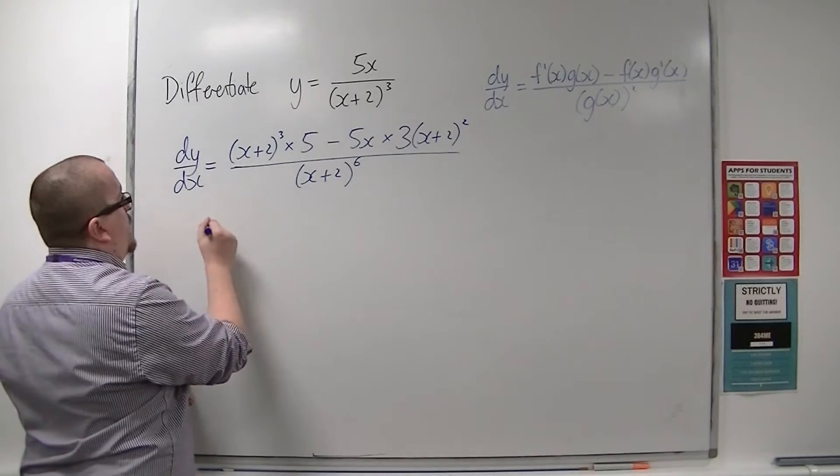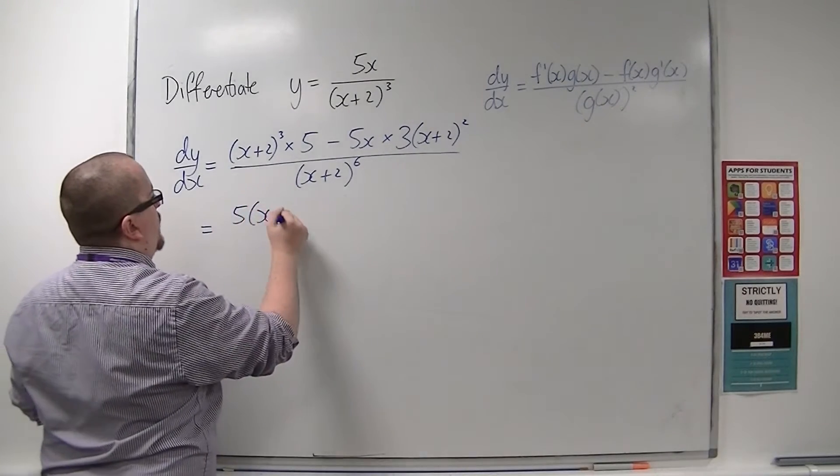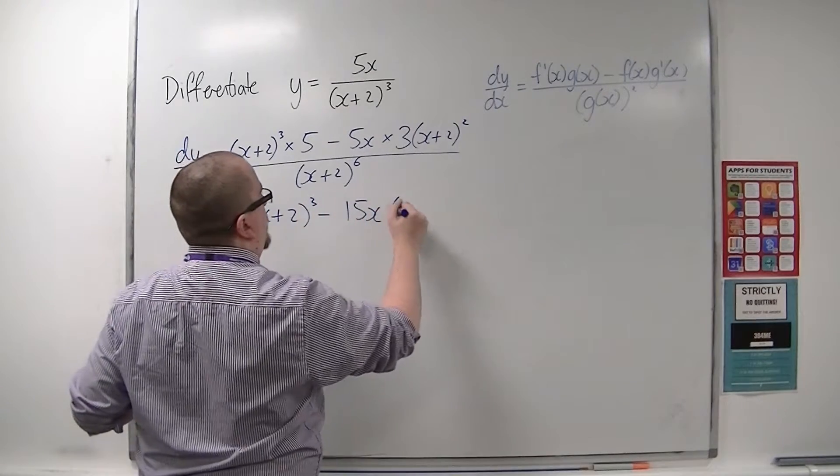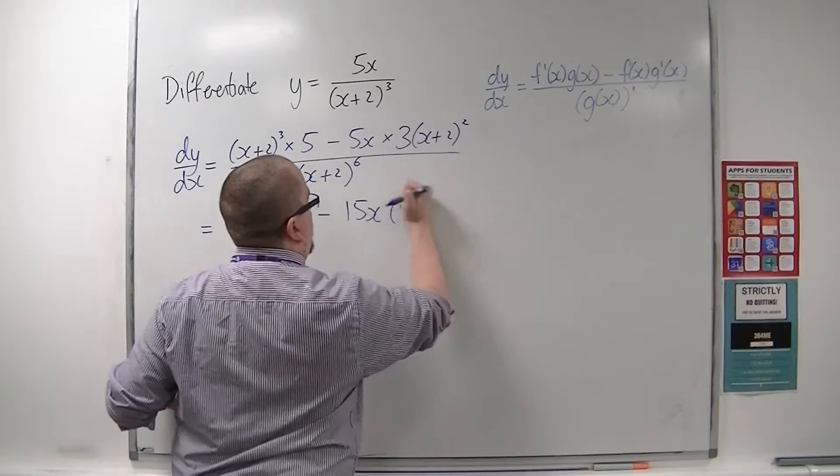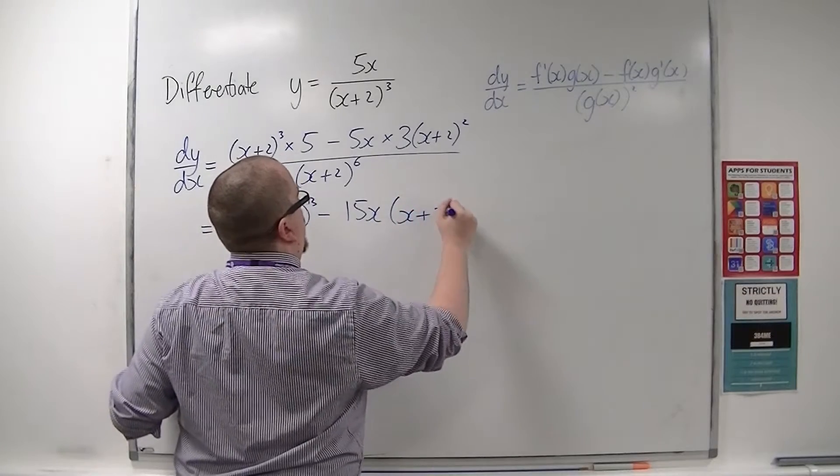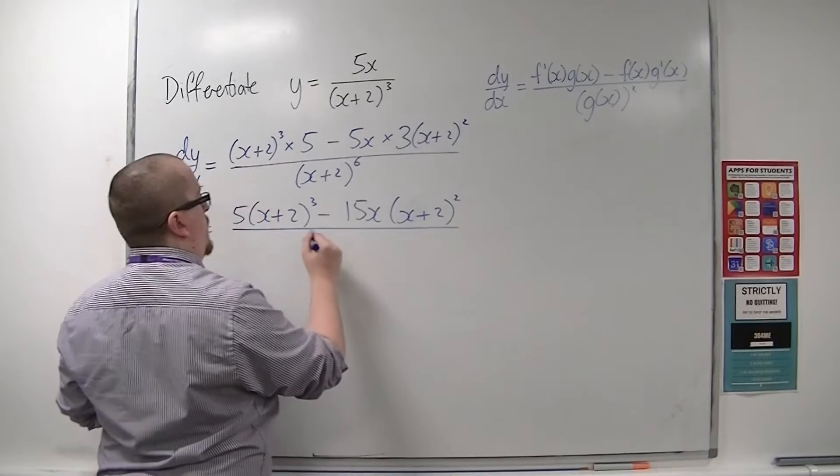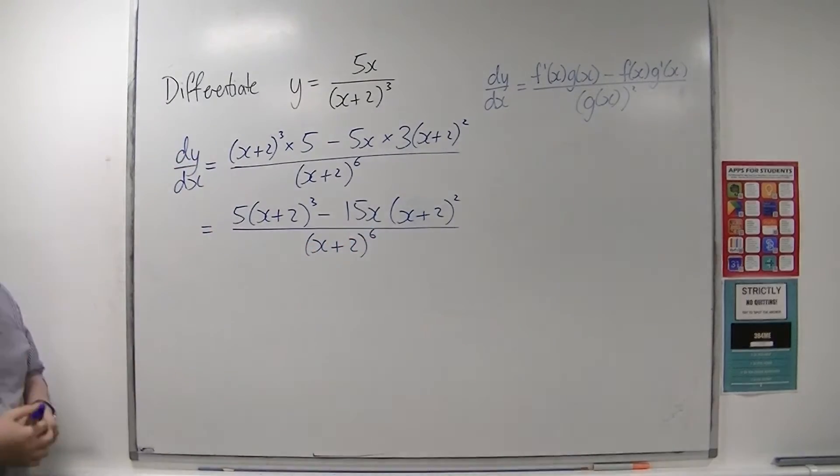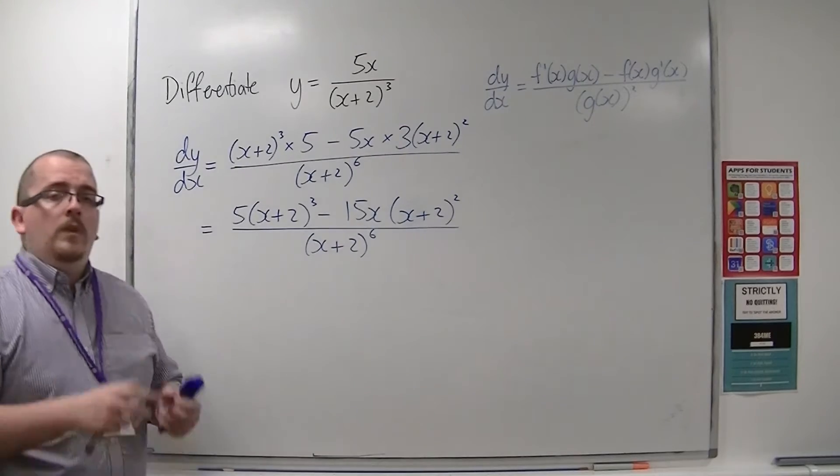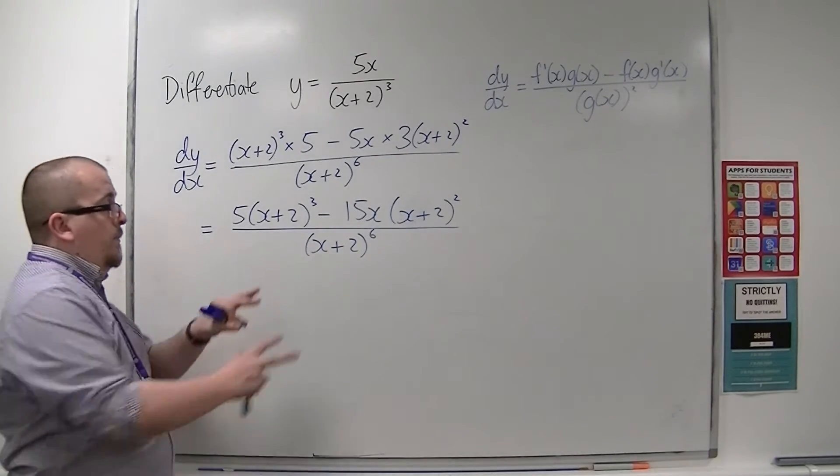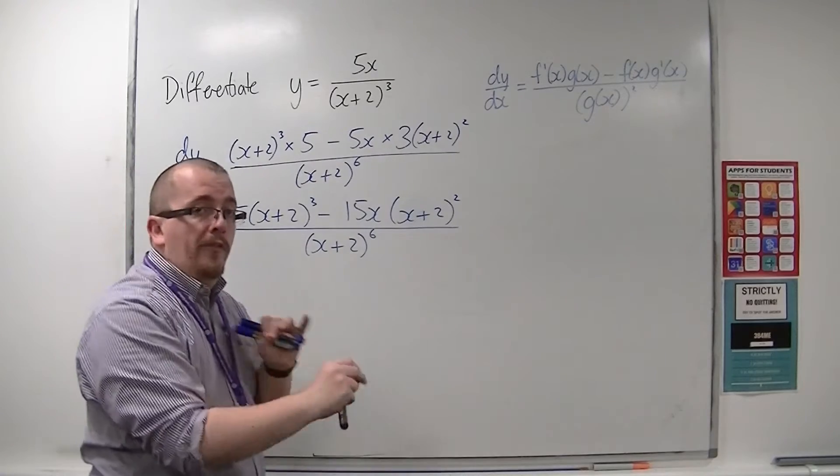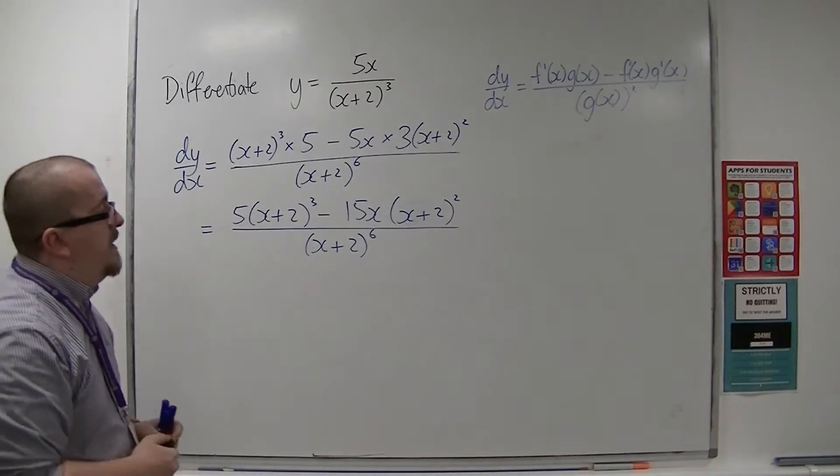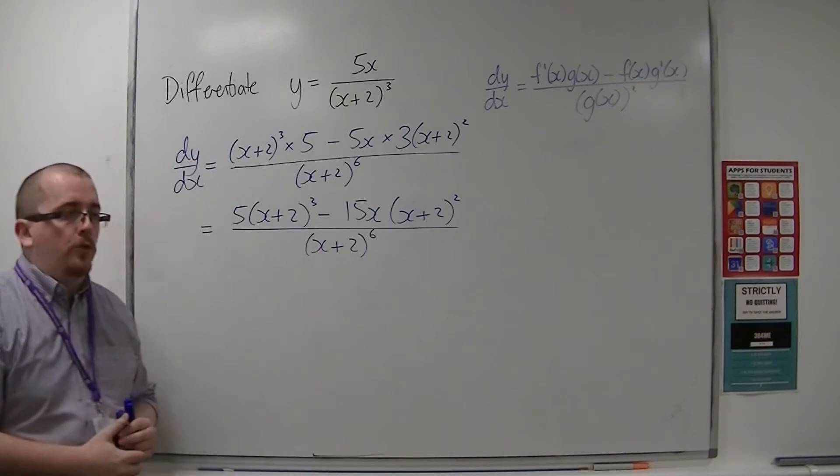Let's tidy that up. We've got 5(x+2)³ take away 15x times (x+2)² all over (x+2)⁶. Now that's using the quotient rule, but we also want to be able to simplify this because in its current state it's quite difficult to work with.